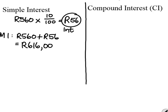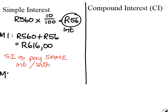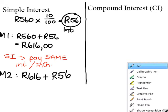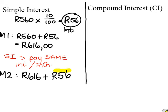Now this is where you start distinguishing between simple interest and compound interest. With simple interest, you pay the same interest per month. So when I go to month two, I have got 616 Rand plus — what is my interest on the amount she had to pay? That interest was 56 Rand. Do you see that we are adding the same amount every month?